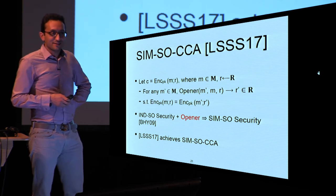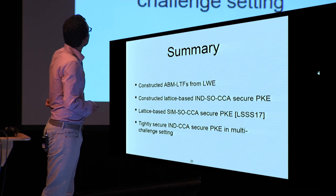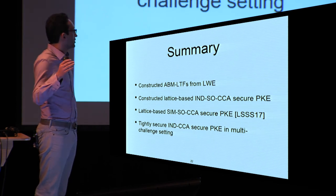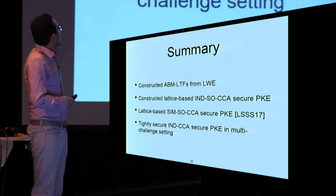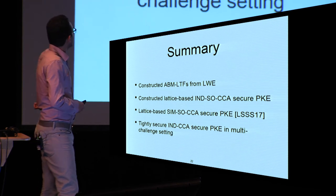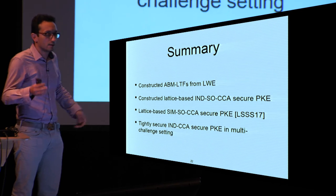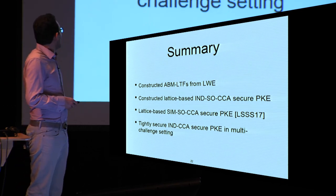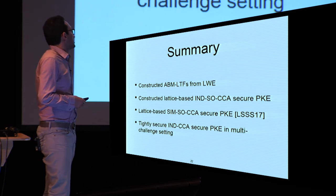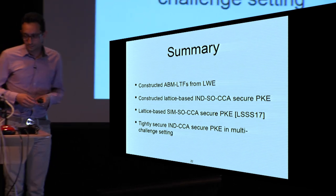To conclude: both schemes construct ABMLTFs from lattices — BL17 uses weak PRF, LSS17 uses PRF. Both schemes achieve indistinguishable selective opening CCA security. LSS17 additionally achieves simulation-based SO-CCA security, which is stronger. We also achieve tightly secure CCA-secure public key encryption, which is a contribution not discussed in detail here. Thank you.